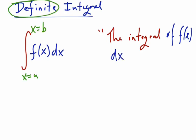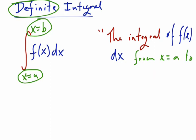The thing that makes it a definite integral is that there are limits of integration — in this case, from x equals a to x equals b. So the way that we read this is: the integral of f dx from x equals a to x equals b. Remember, the thing that makes this a definite integral is those limits of integration. We'll talk about indefinite integrals in a different section.